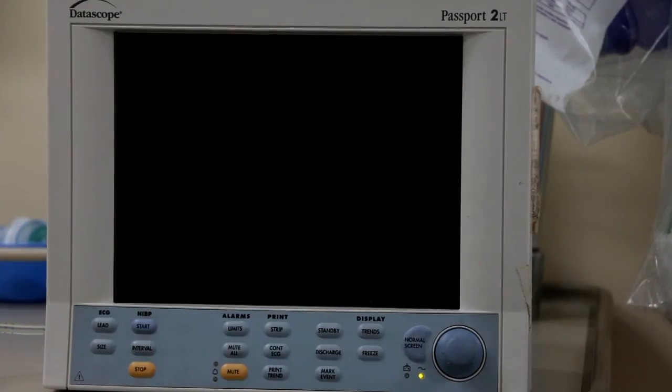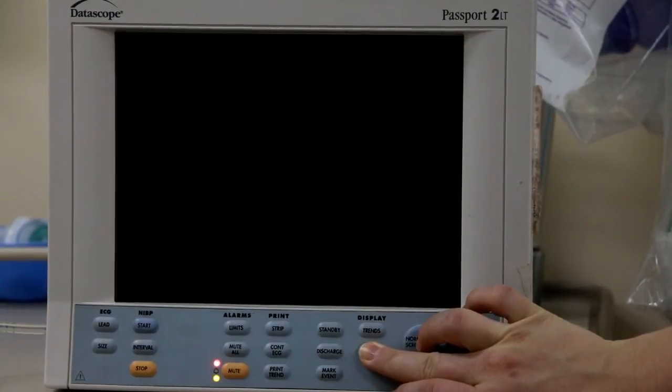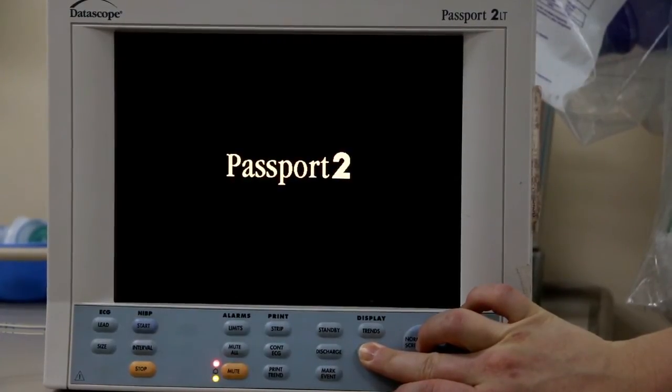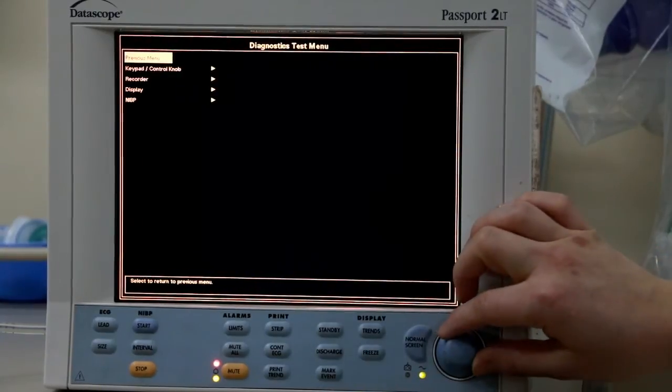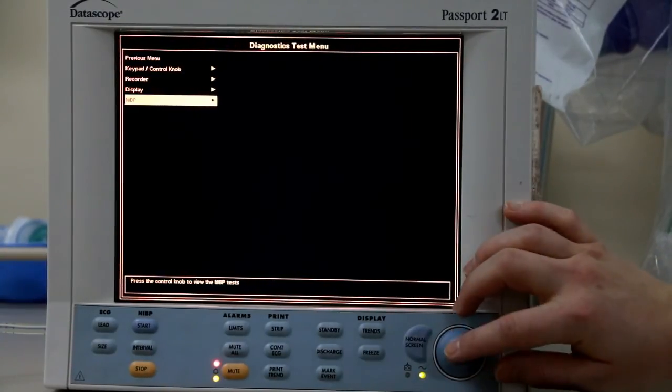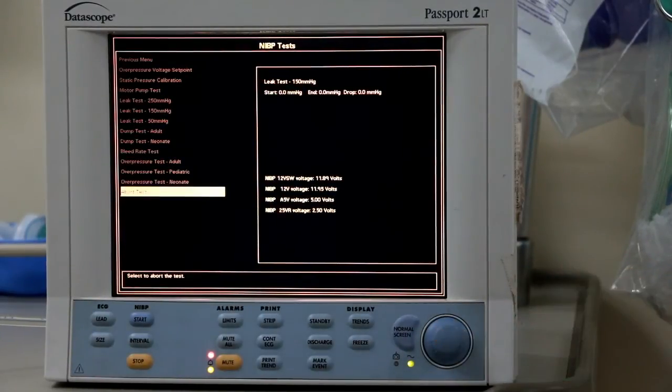If the device is not inflating to a high enough pressure, there may be a leak. A leak test can be done to determine if there is a leak. To do this, turn the machine on. Hold the freeze button until the diagnostics main menu appears. Then click diagnostic test, choose NIBP, and then select leak test. This test shows how much pressure leaks out of the machine over a 5 second interval.